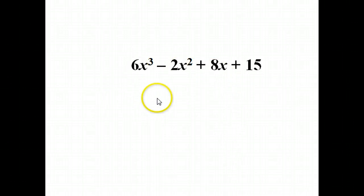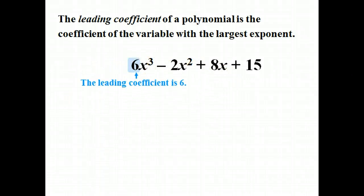First of all, let's talk about the leading coefficient. And as long as it's written in standard form, in other words, with these exponents in decreasing order. This goes 3 is the exponent, 2, then 1. As long as it's written in standard form, the leading coefficient is this very first number over here. In this case, it's a 6.